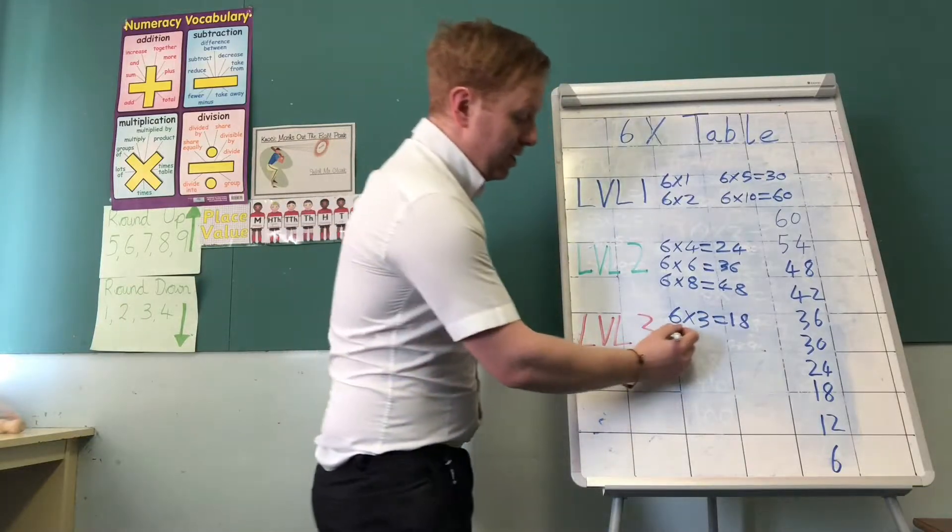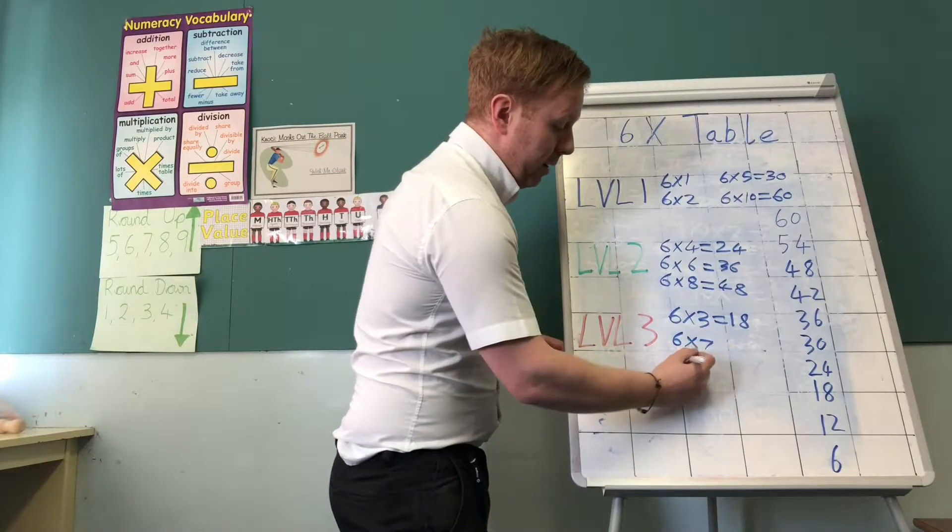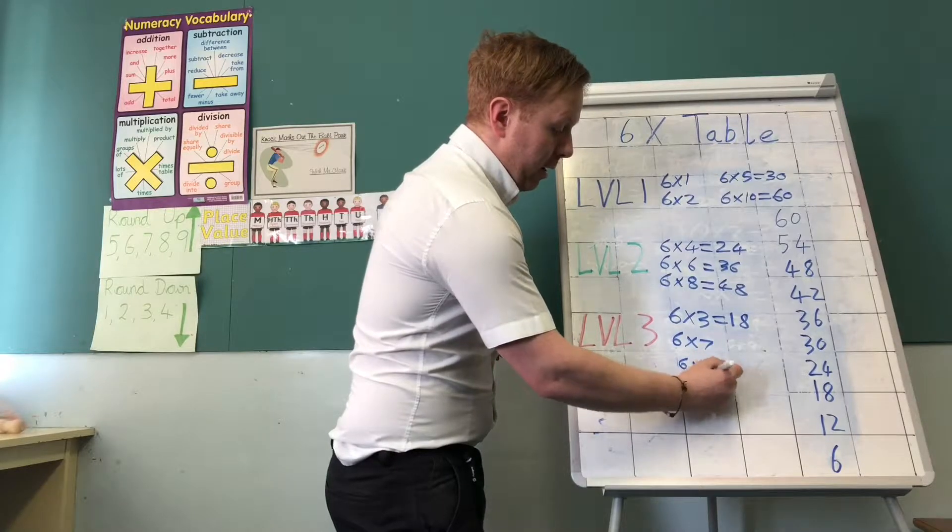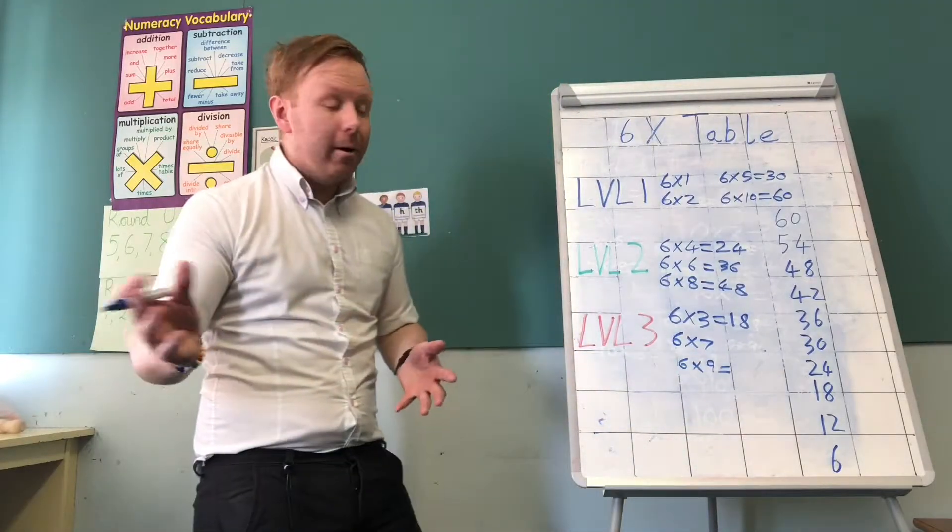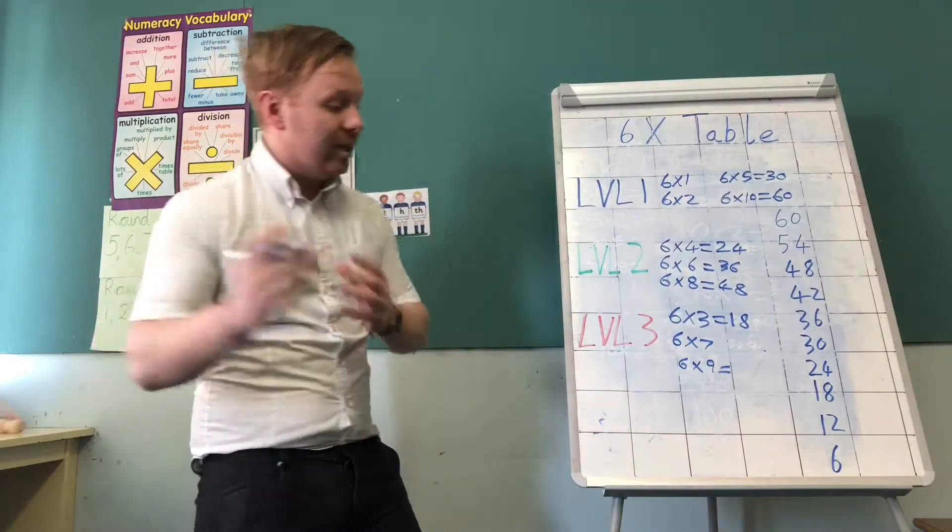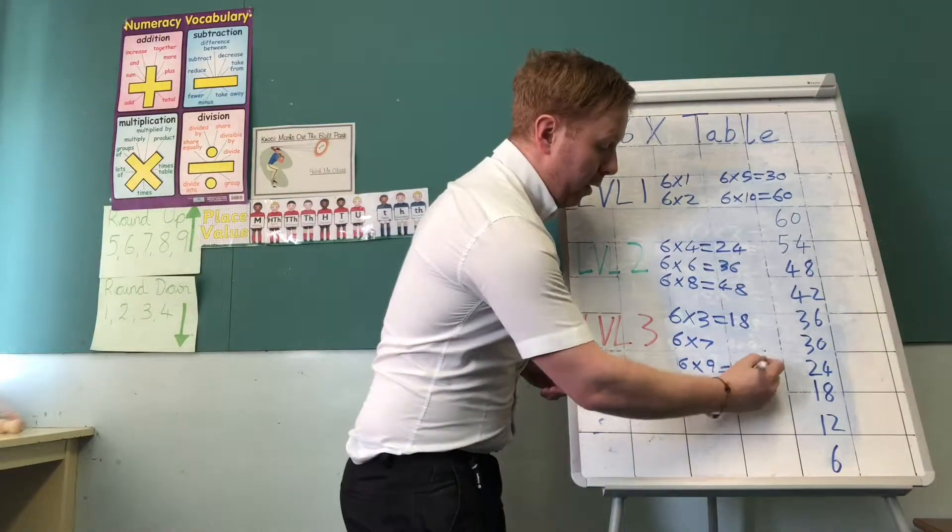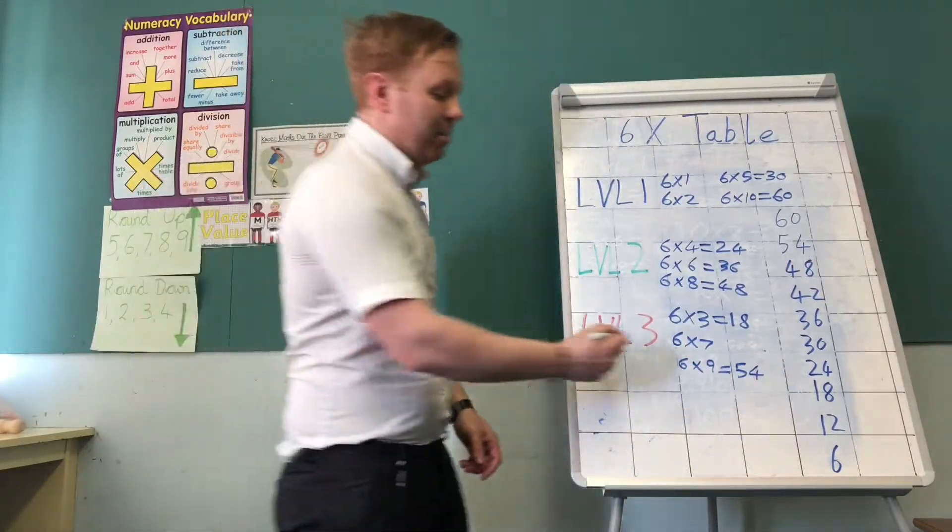I now bring in 6 times 7 and 6 times 9. 6 times 9 is the almost there. It's 6 away from being 60. So that is 54. And the final one I want to introduce is 6 times 7.